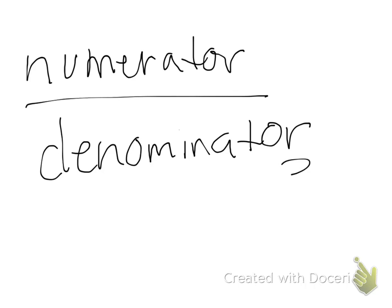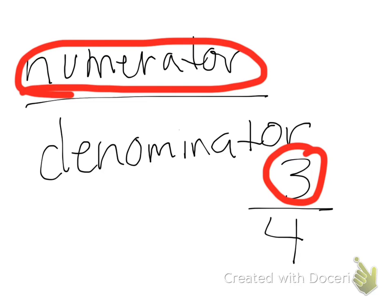So if we look at the fraction 3 fourths, my numerator, what's circled in red, is 3 because it's my top number.